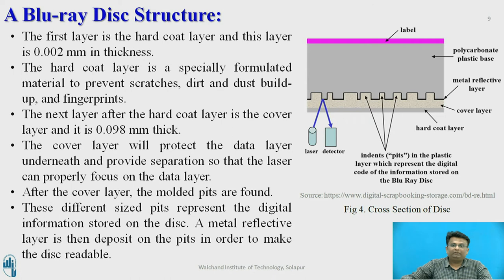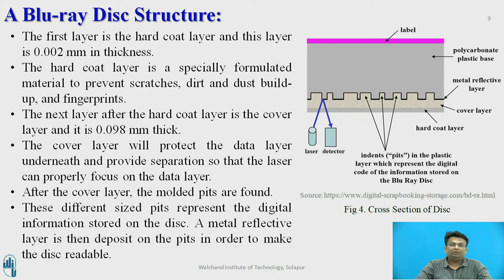The Blu-ray disc structure: The figure shows the cross-section of a Blu-ray disc. The first layer is the hard coat layer, about 0.002 mm thick, specially formulated to prevent scratches, dirt, dust, and fingerprints. Next is the cover layer, 0.098 mm in size, which protects the data layer underneath and provides separation so a laser can properly focus on the data layer. After the cover layer is the molded pits — the metal reflective layer where information is stored. Data is stored in the form of different-sized pits representing digital information, with a metal reflective layer deposited onto the pits to make the disc readable.